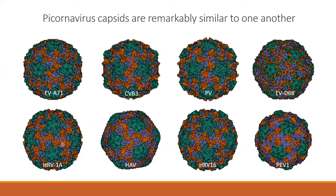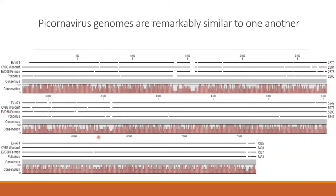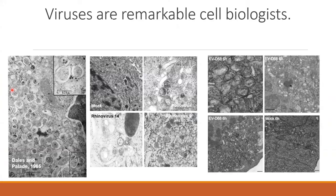Their genomes are remarkably similar to each other. They're very small — in the 7,500 nucleotide range, about the size of two human genes. When we look at their homology, the higher the bar the more similar they are, and there are very few gaps. When we look at these four different viruses — many associated with acute flaccid myelitis — we find they're actually remarkably similar even though they may have differences in etiology or outcome.